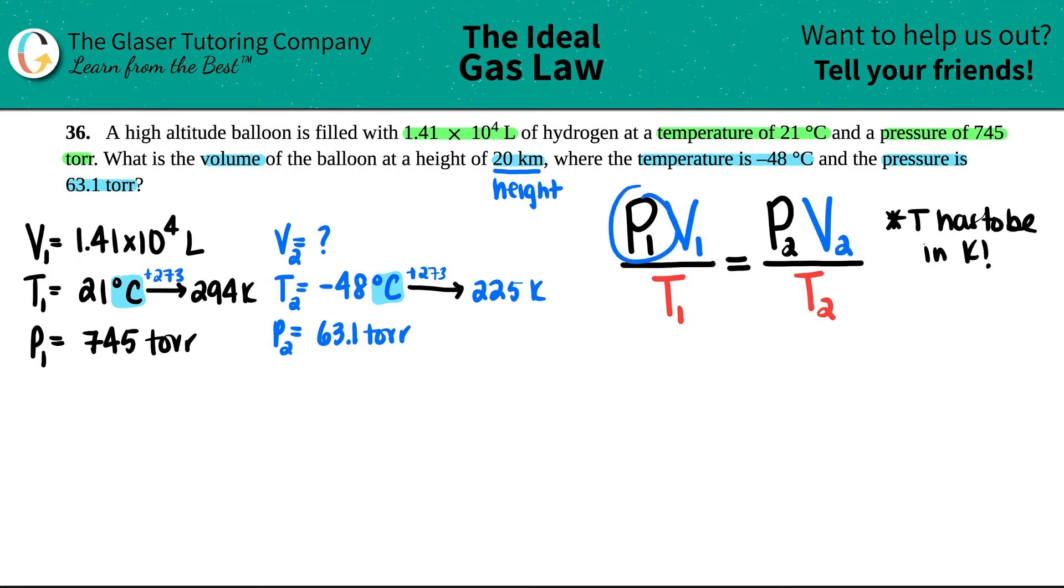For your pressure and your volumes, the units don't have to be anything specific, they just have to match. So in this case I have torr for pressure and I have torr for pressure, so they match. That's all good. In this case the volume is a liter, I'm going to solve for the other volume, so that unit will come out to be a liter.